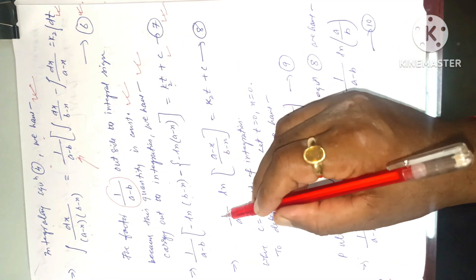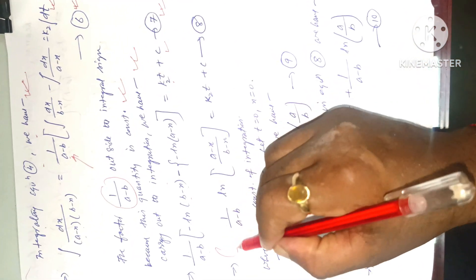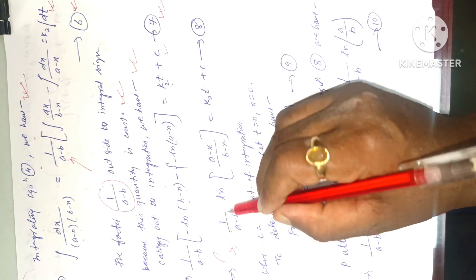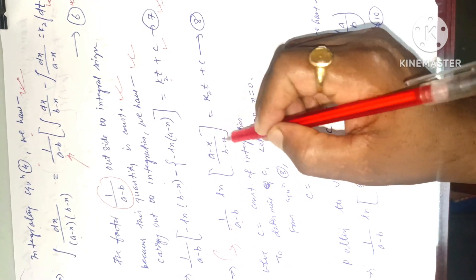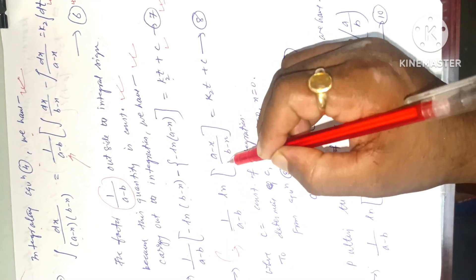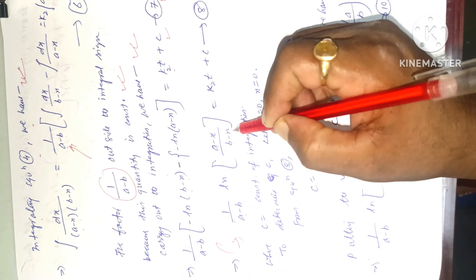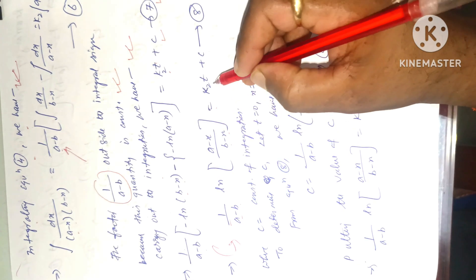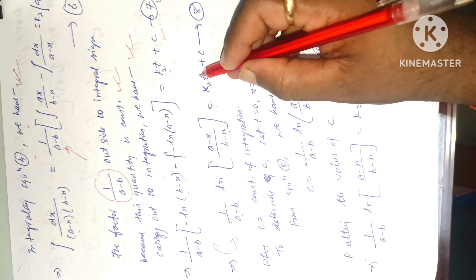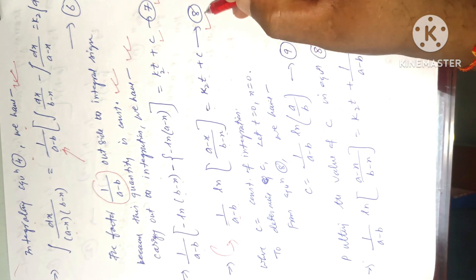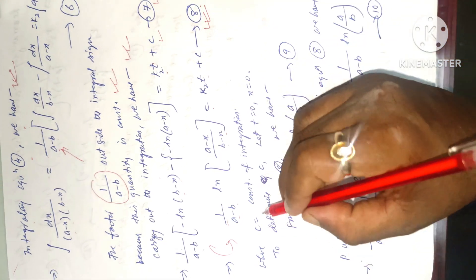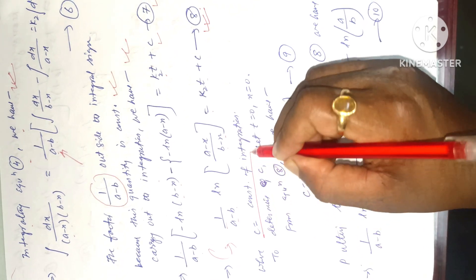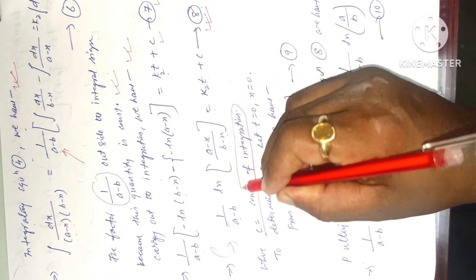This simplifies to: 1/(a − b) × ln[(a − x)/(b − x)] = k₂t + c, equation 8, where c is the constant of integration.